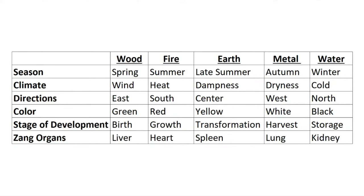The table here shows the extension of the five elements to different aspects. For example, season-wise: wood is spring, fire is summer, earth is late summer, metal is autumn, and water is winter.